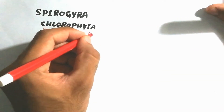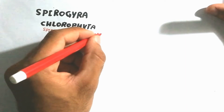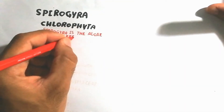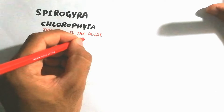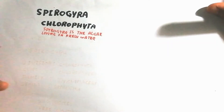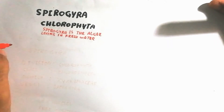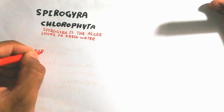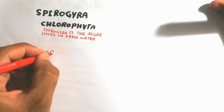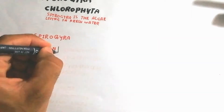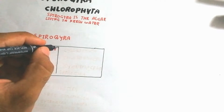Spirogyra is a freshwater algae and it is a Chlorophyta because chlorophyll is present, which is used to convert light into sugar. That is why it is an autotroph — it makes food itself.